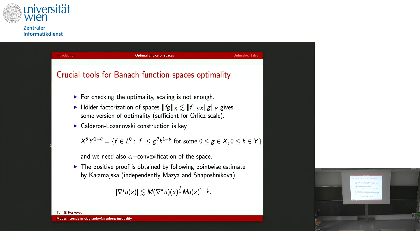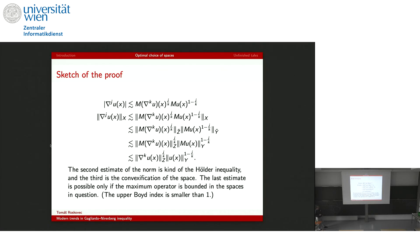We also need the alpha-convexification of spaces. There is a crucial tool that we can use to work in all Banach functional spaces X, Y, Z and to check if the inequality is valid: the pointwise inequality by Kalamaiska, and independently later by Maz'ya and Shaposhnikov. Basically in this field everything was proved at least twice — and then others met; it's some curse of this field. This pointwise inequality has no norm, which is very important and very useful. You can estimate in a similar way if you take the maximal operator on the right-hand side, separately for the higher derivative and separately for the function itself. I will sketch the proof — it's actually just one slide.